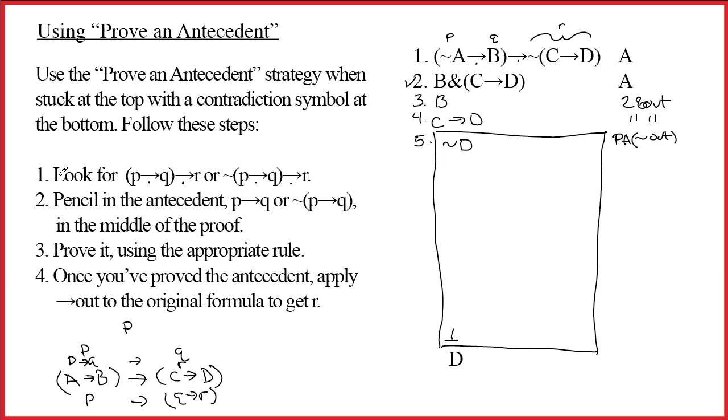We accomplished line one. We looked for one of these two formulas and we found it. Step two, pencil in the antecedent. The P arrow Q part or the tilde P arrow Q part. We know the antecedent comes before the main connective in a conditional. So the antecedent is tilde A arrow B and it says pencil it in in the middle. Let's also talk about why we're doing this. The name of this strategy is proven antecedent, and so what we're trying to do is prove the antecedent of line one.